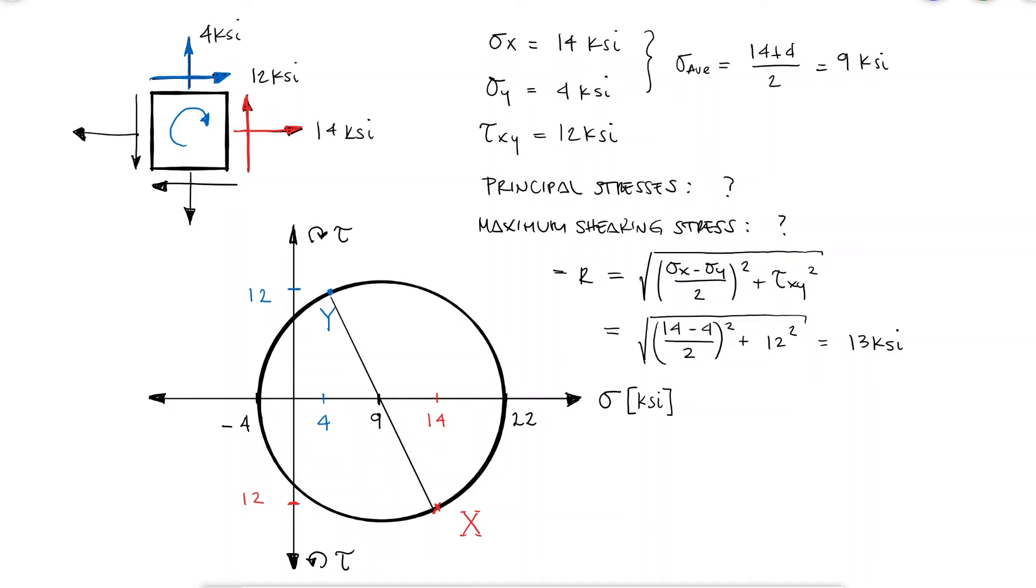The answer to our questions would be 13 ksi for the maximum shearing stress and minus 4 and 22 ksi for the principal stresses, but let's also calculate the angle theta p and draw our rotated stress element for both the principal stresses and the maximum shearing stress.